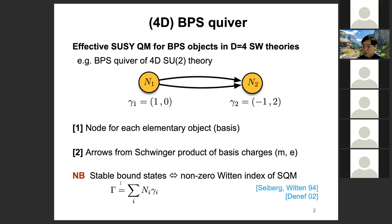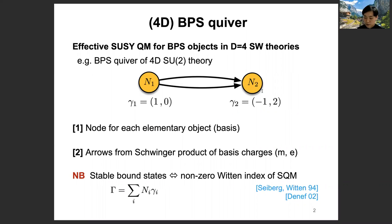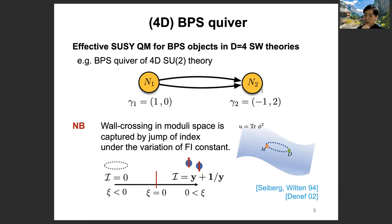We can use this kind of quiver quantum mechanics to analyze whether a given charged state is stable or not at a particular point of moduli space. When we fix the charge of BPS objects of interest and expand it in terms of basis γ1 or γ2, then we can assign the rank of the quiver quantum mechanics — rank of gauge group. When the charge of a given object is expanded as N1·γ1 + N2·γ2, we assign rank U(N1) to the first node and U(N2) to the second node. We then compute the Witten index of this supersymmetric gauge quantum mechanics to see whether this state is stable.